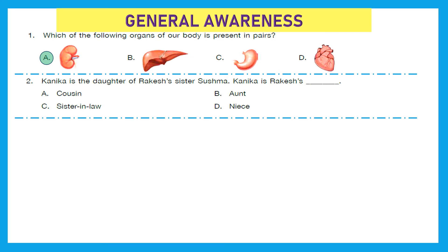Question 2: Kanika is the daughter of Rakesh's sister Sushma. So who is Sushma? Sushma is Kanika's mother. And who is Rakesh now? Rakesh would be Kanika's uncle. So what is the relation between Kanika and Rakesh? Kanika would be Rakesh's niece. Option D is the right answer.